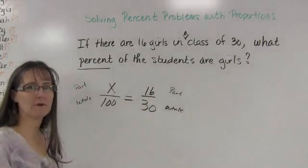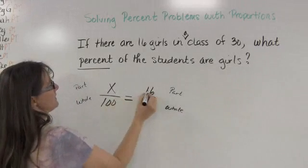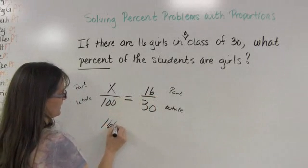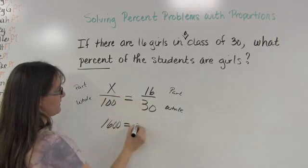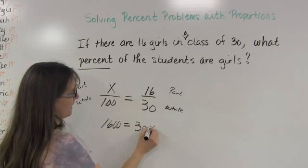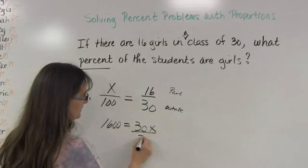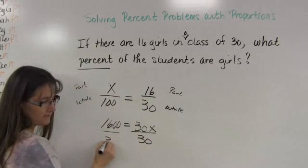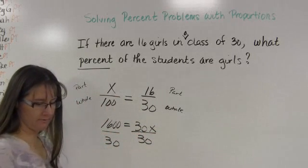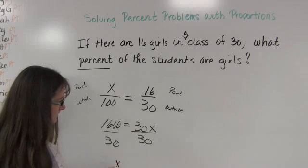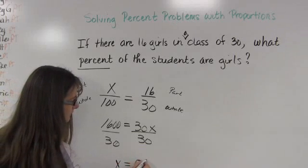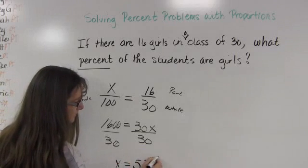Well, once I have a proportion, it's just time to cross-multiply and divide. 16 times 100 is 1,600. 30 times x is 30x. And when I divide both sides by 30, I discover that x is equal to 53.3 repeating, and that's a percent.